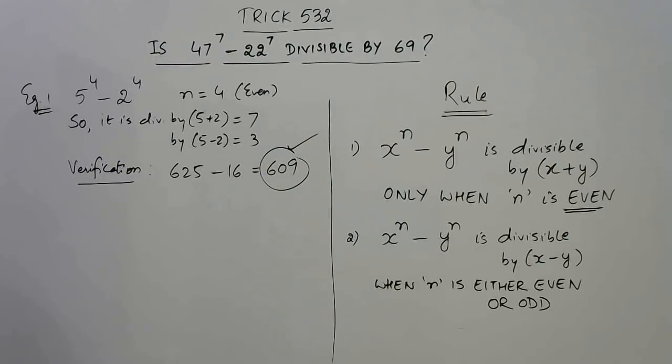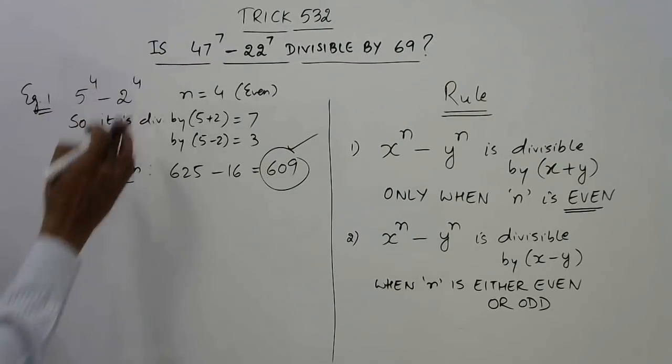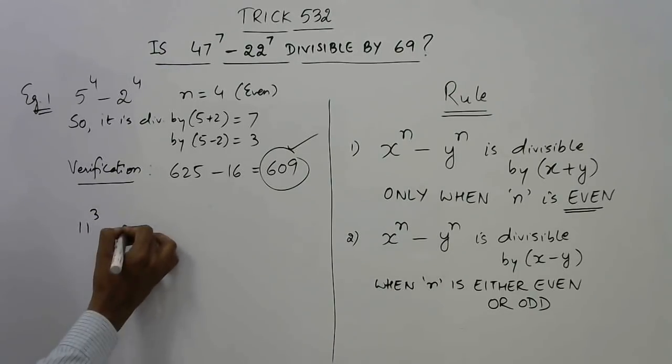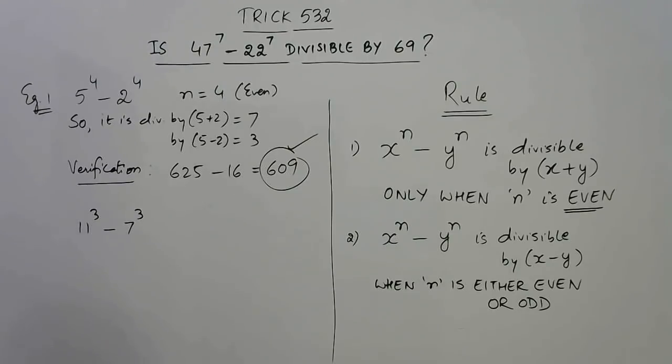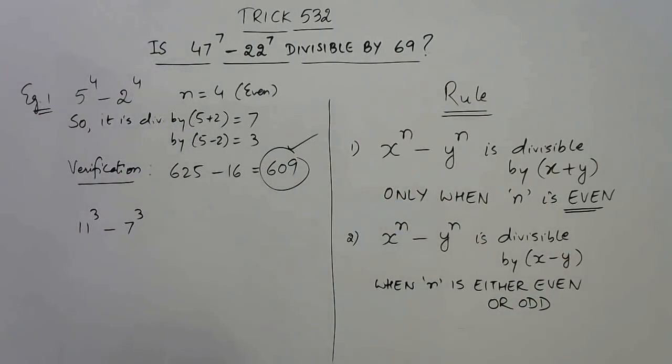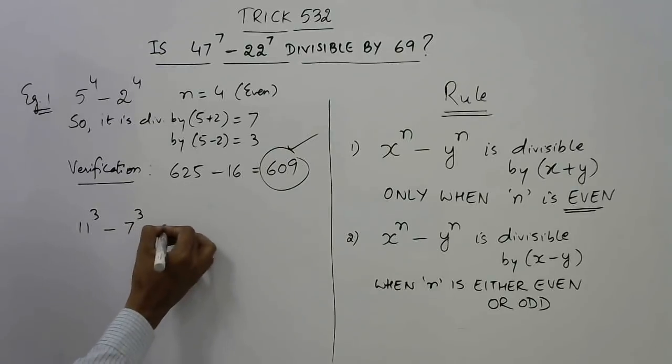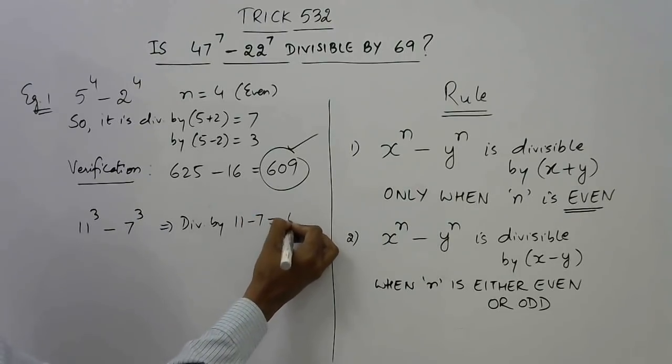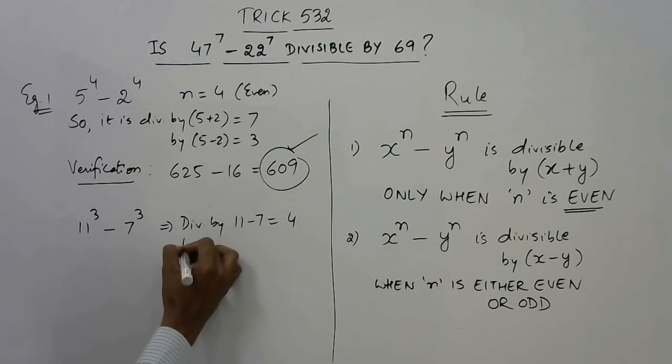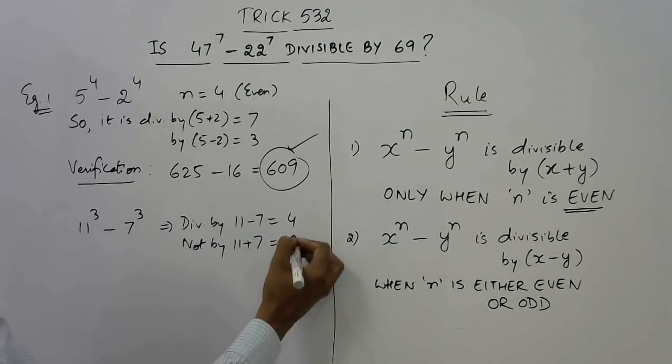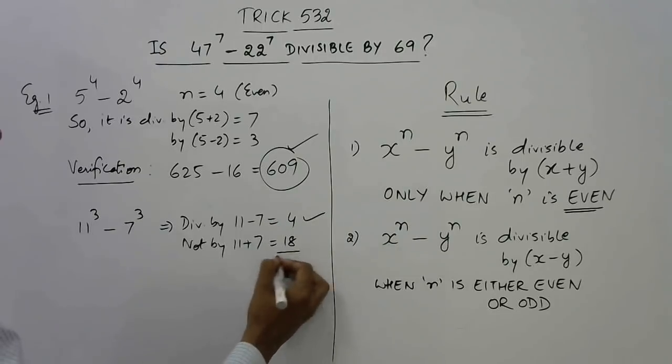Now if you want to take the odd powers, suppose we have 11 cube minus 7 cube. Now see, the power is odd here. So whenever the power is odd, this expression will only be divisible by x minus y, not by x plus y. So this is divisible by 11 minus 7, that is 4, but not by 11 plus 7, that is 18.